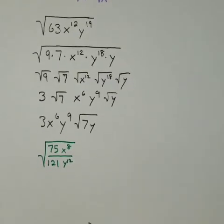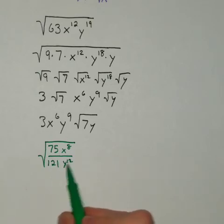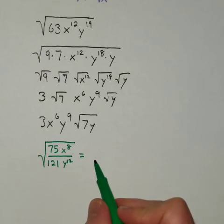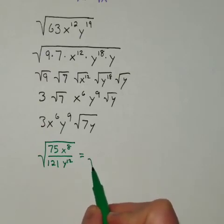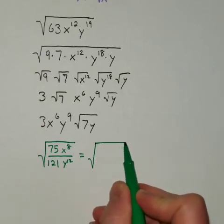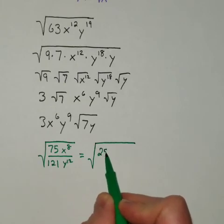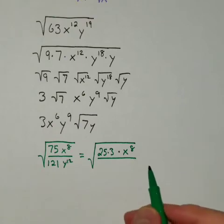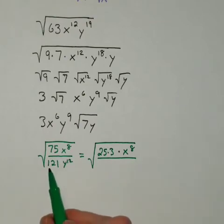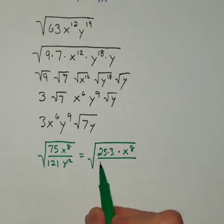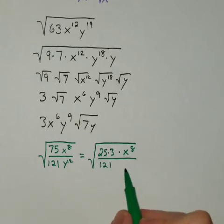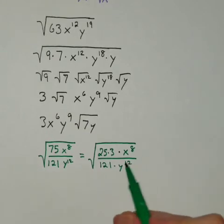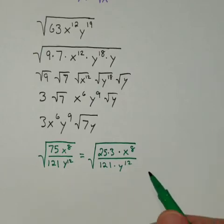So to solve this, I want to again split everything up into perfect squares. Now, 75 is really 25 times 3. So I'm going to call that 25 times 3, and the x to the 8th is already a perfect square. On the bottom, 121 is itself a perfect square, as is y to the 12th. So now everything that can be written as a perfect square is.